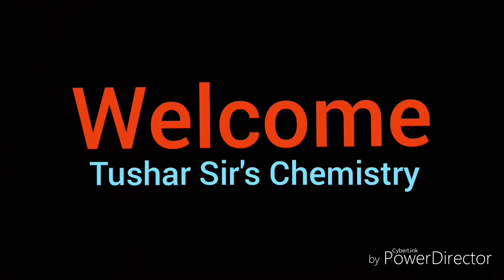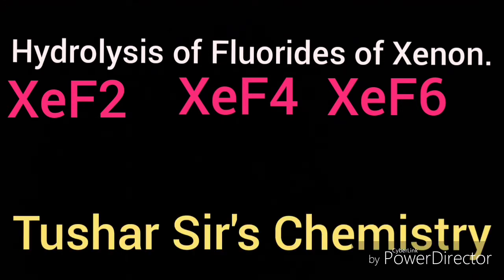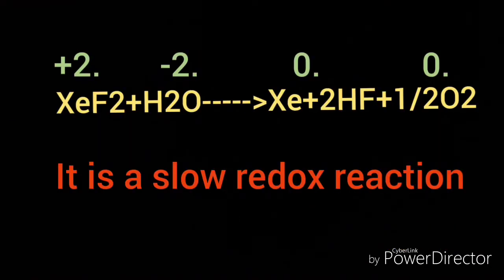Welcome once again to my channel. Hope this video will help you to know about the hydrolysis of fluorides of xenon. There are three types of fluorides: xenon difluoride, xenon tetrafluoride, and xenon hexafluoride. Xenon difluoride on hydrolysis gives xenon, HF, and oxygen.